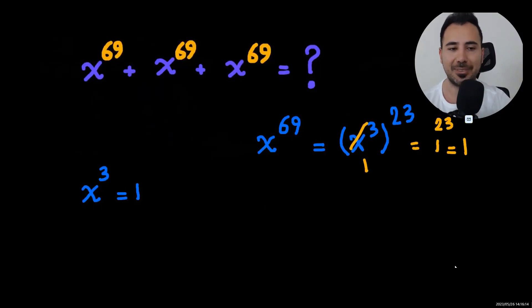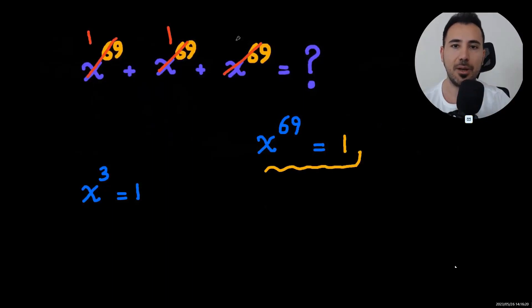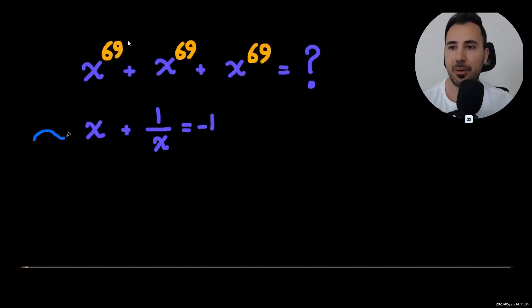So I think the answer is very clear now. Instead of each x to the power of 69 we're going to put one, and the answer is three. If you found the video useful, don't go without a like.